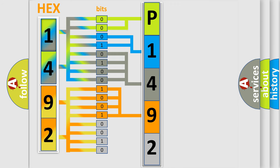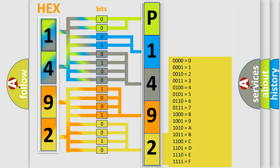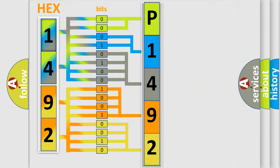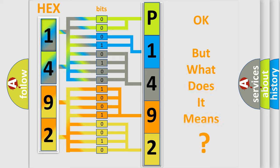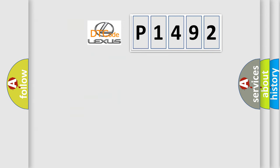A single byte conceals 256 possible combinations. We now know in what way the diagnostic tool translates the received information into a more comprehensible format. The number itself does not make sense to us if we cannot assign information about what it actually expresses. So, what does the diagnostic trouble code P1492 interpret specifically for Lexus car manufacturers?